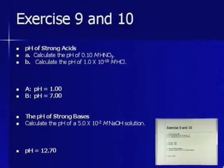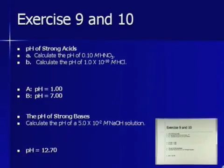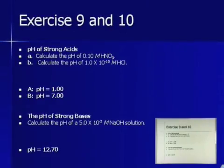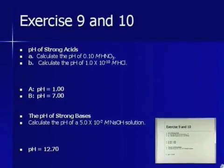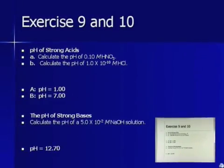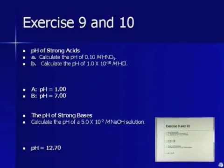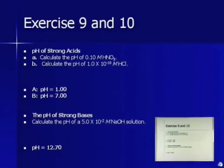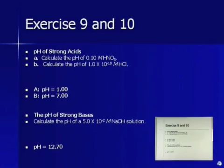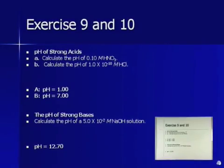Exercise 9 and 10. pH of strong acids. Calculate the pH of 0.1 molar of HNO3, and calculate the pH of 1.0 times 10 to negative 10 molar of HCl. So the one I think you're going to have trouble with is letter B. And once we go through exercise 10, we'll be able to see the video and talk about why B is actually 7 and not pH of 10 like you originally calculated.